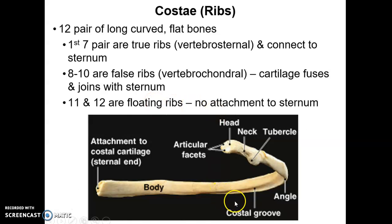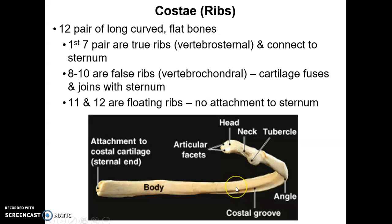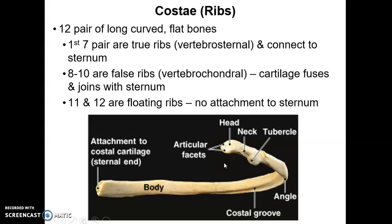Lastly, the most inferior pairs — 11 and 12 — are called the floating ribs. They have no attachment to the sternum; they just kind of end here. But they do articulate posteriorly with the thoracic vertebrae.